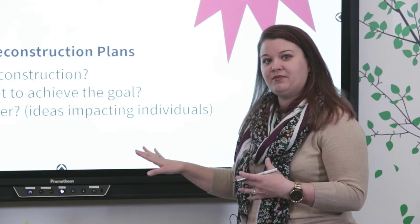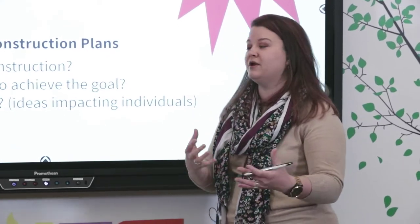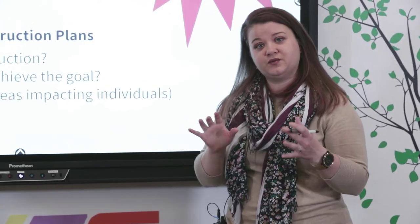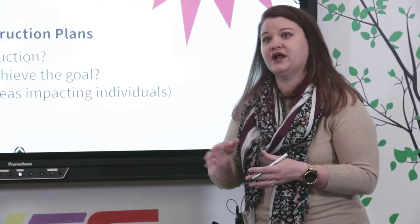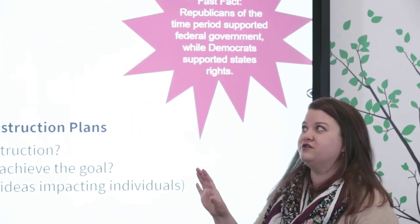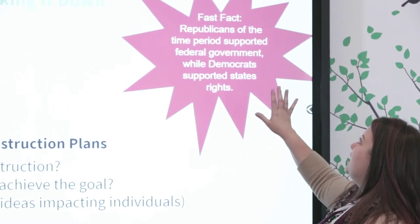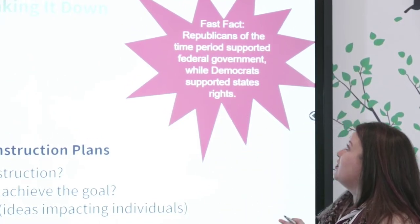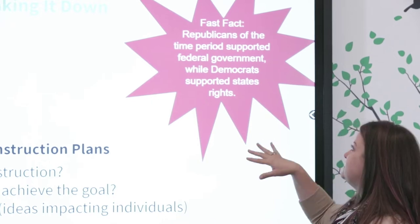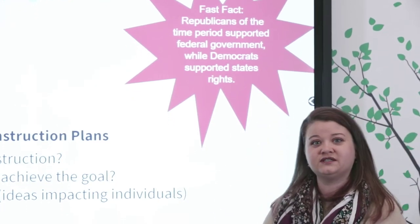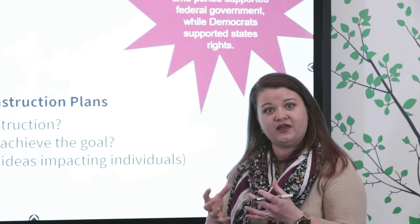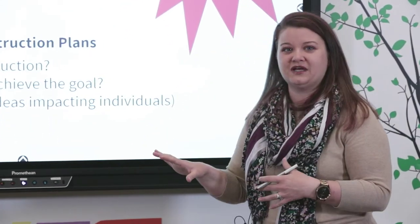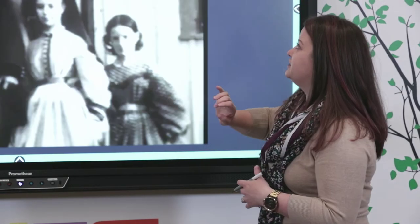With Reconstruction plans, we're going to think about the goals of Reconstruction, how each plan attempted to achieve those goals, and how and why they differed. A quick fast fact: Republicans of the time period — that was Lincoln's party — supported more of a federal government feel, whereas Democrats, which were the southern states, had more of a state's rights value. That's shifted over time a little bit, so it gets a little fuzzy.